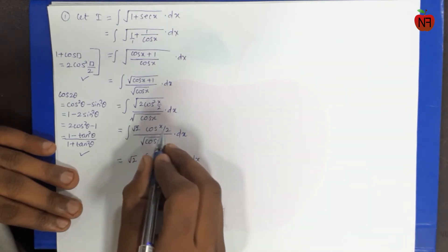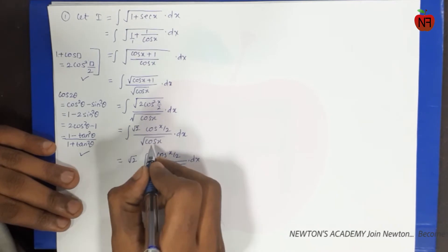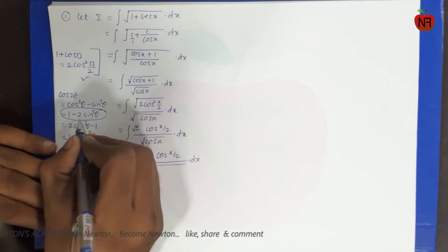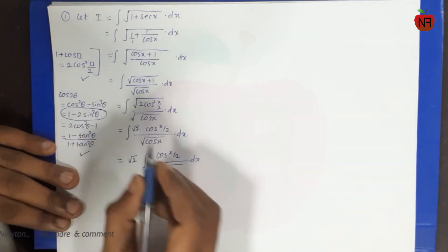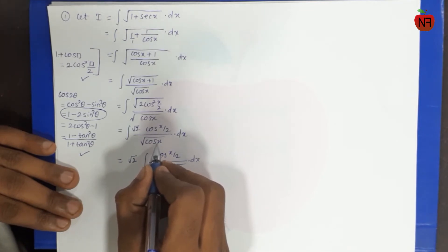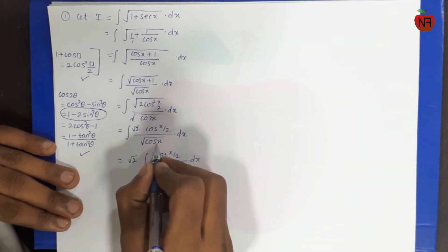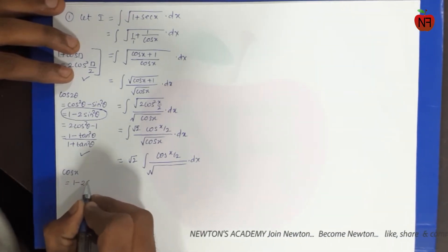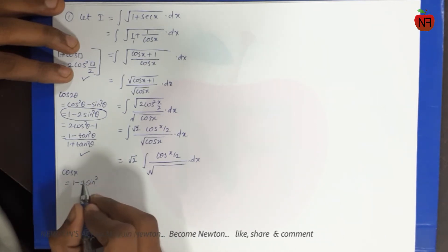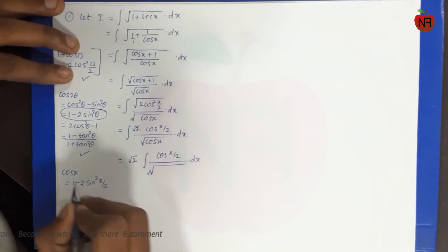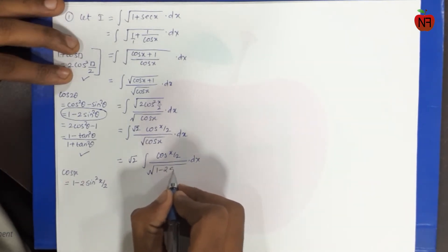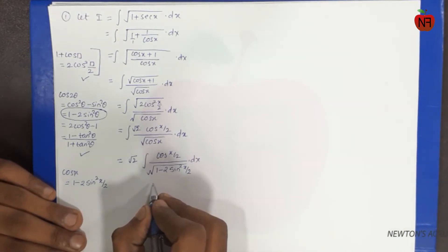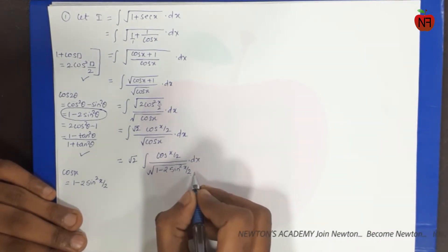Numerator me cos(x/2) hai, toh cos x ko substitute nahi kar sakta. Cos x in terms of sin ka formula: cos x = 1 − 2sin²(θ) tha — double angle formula tha. Toh θ hua idhar half, single angle hai. Toh cos x = 1 − 2sin²(x/2). Ab main substitute kar sakta hoon — sin(x/2) ko t substitute karta hoon.